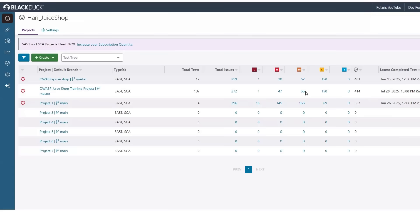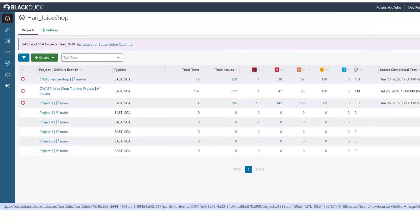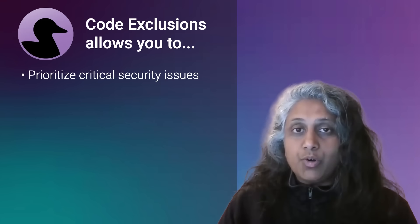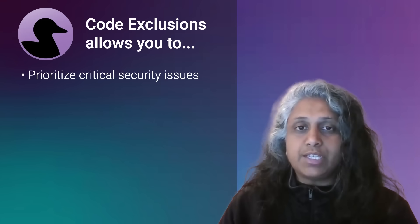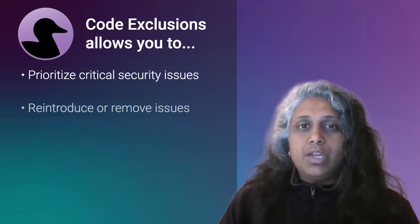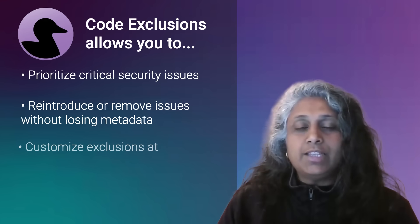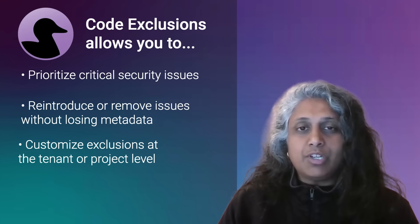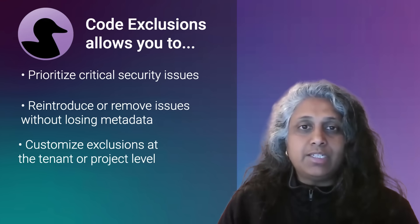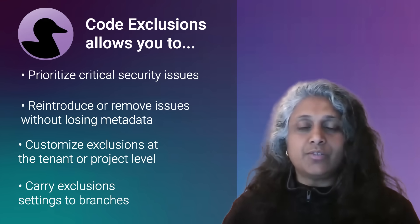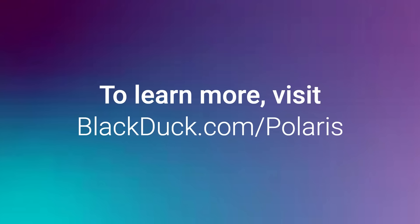I've removed the code exclusion and those issues seamlessly reappear back in my project. With code exclusions, this allows developers to prioritize on the right issues that are most important and provide actual security risks for the organization. It also gives you the flexibility to reintroduce or remove issues without losing any issue metadata along the way. You can configure it at the tenant level, which means it's inherited down to the project level, or you can customize it down at the project level, which means branches also get it. This is an easy way to help your developers prioritize on the right issues. To learn more about code exclusions or other features, please visit www.blackduck.com/polaris to learn more.